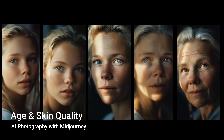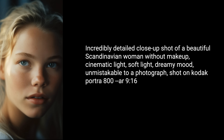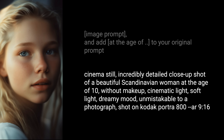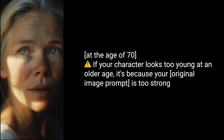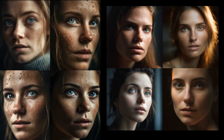One of the most popular questions people ask about Mid-journey is how to consistently age a character. First, let's create a character we like. Then insert your image as an image prompt and add an age parameter to your original prompt. Here is the same character at the age of 20, 40, and 70. If your character looks too young at an older age, it's because your original image prompt is too strong. Adjust image weights by lowering the value of the image prompt at the end of your prompt. Another common question is about skin defects in close-up portrait shots. Sometimes Mid-journey adds unwanted elements in the form of strange skin deformations. To prevent that, remove the word 'macro' from your prompt. You can also add the keyword 'skin of a baby,' or try applying negative weights or the no parameter to specify what you want to get rid of.